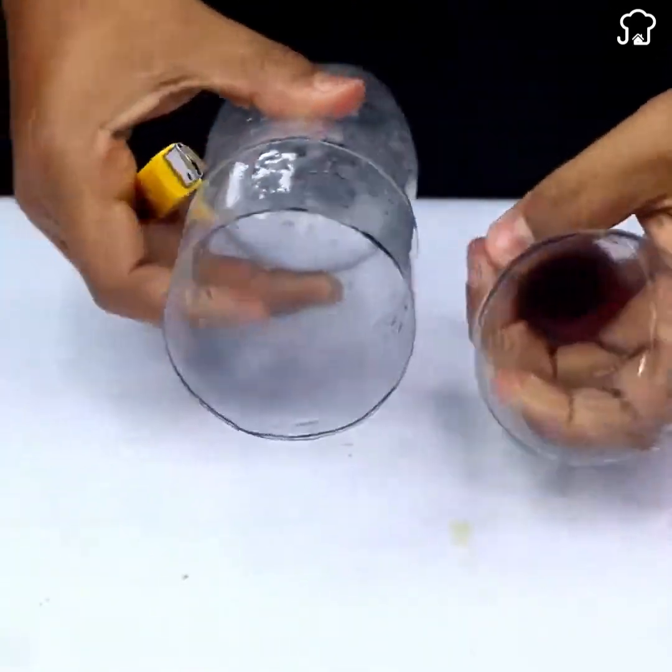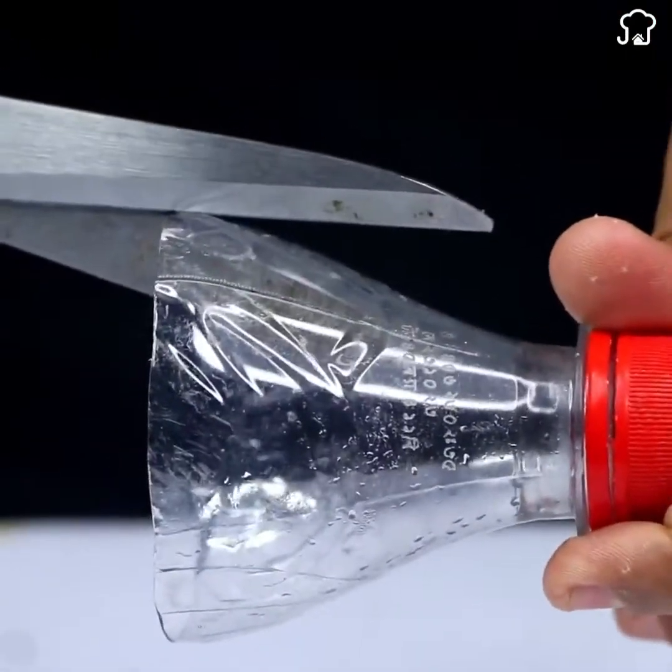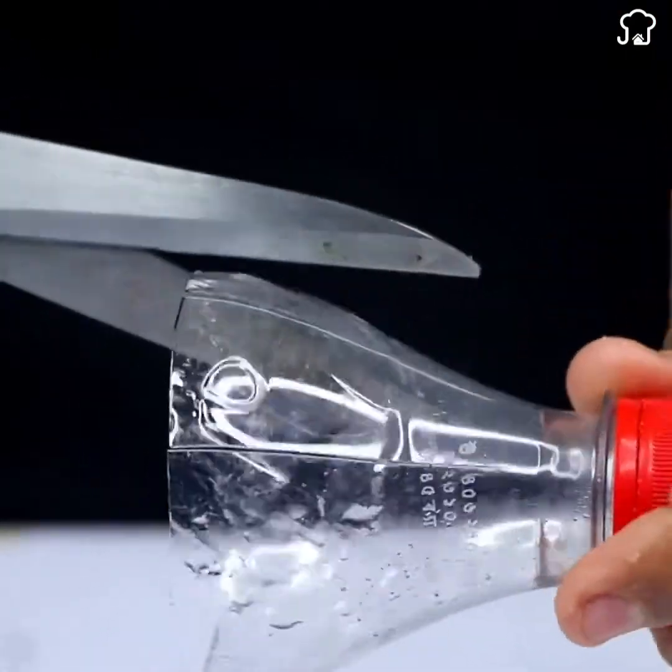We'll reserve the largest part. Now, with scissors, we'll make some cuts in the smaller part of the bottle, shaped like a funnel.